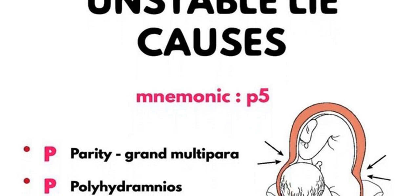The second P is polyhydramnios. If the amniotic fluid concentration is greater than 25 cm on ultrasound, this can also cause the unstable lie.